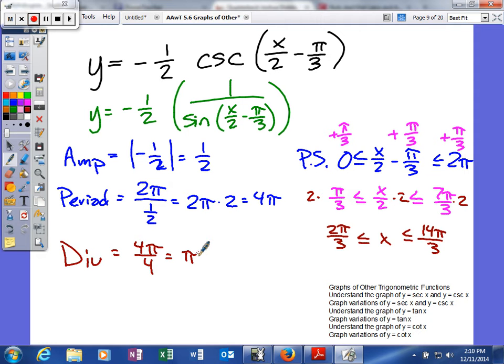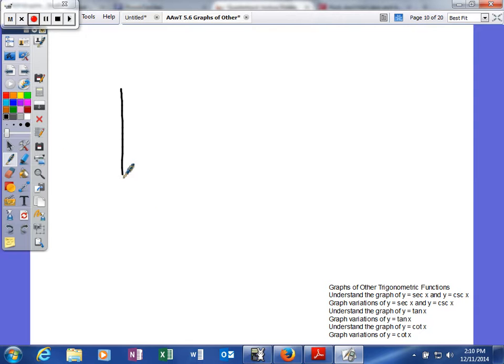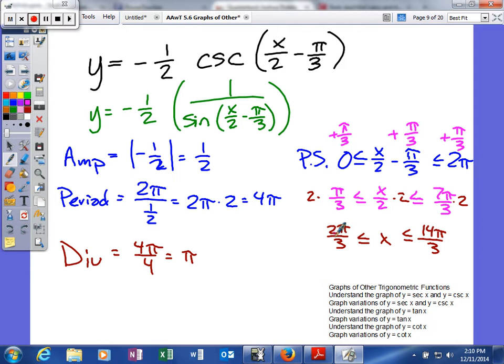So we have all of our information. Now let's go ahead and see if we can't graph. We'll start off at 2π/3. The reason we start there is because that's the first value of our phase shift. We're going to try to end here, and the way we're going to get there is by adding this.